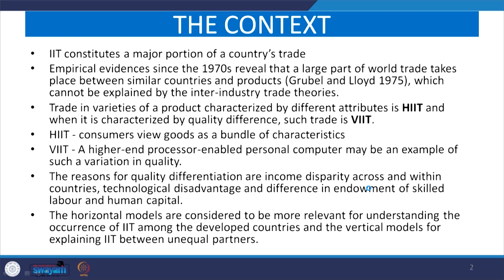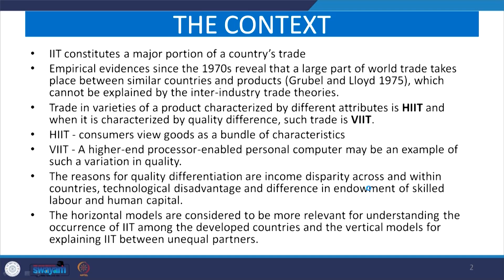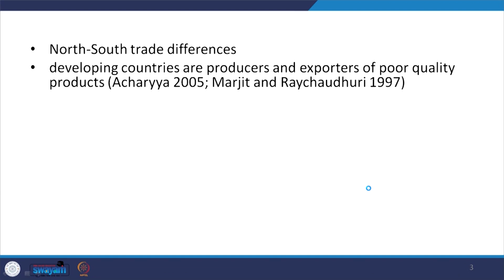Looking at the horizontal model once again, we consider it more relevant for understanding the occurrence of IIT among developed countries, and the vertical model for explaining IIT between unequal partners. Horizontal models are more relevant among developed countries — they trade horizontally differentiated products — whereas among unequal country partners, vertical models are more relevant. These are the views from different experts discussing differences based on quality.